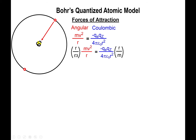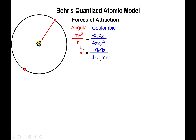Cross-multiplying by r and dividing by m on both sides of the equation, the r's and m's cancel on the left side, and some r's cancel on the right side. Now the velocity squared equals the product of the charges.